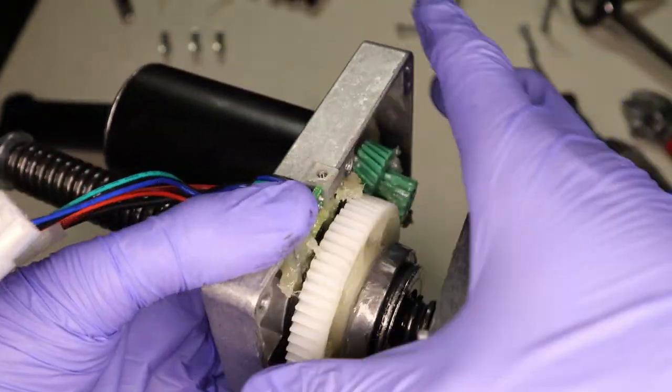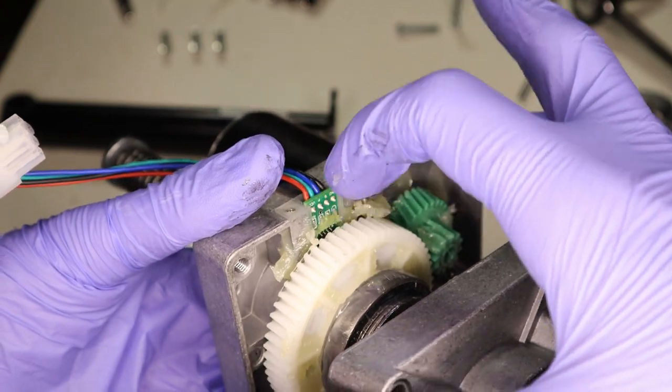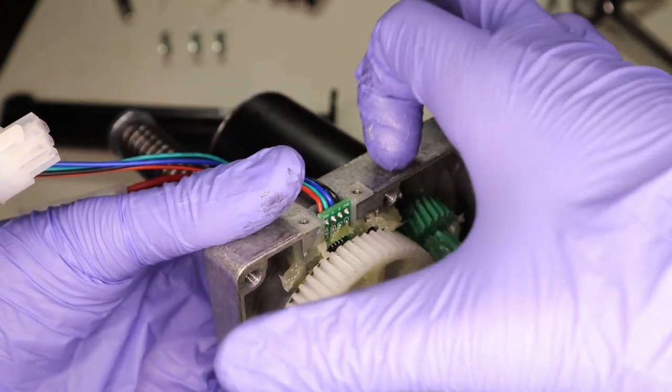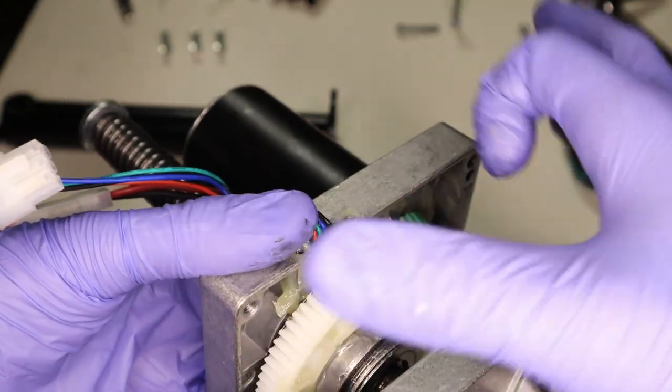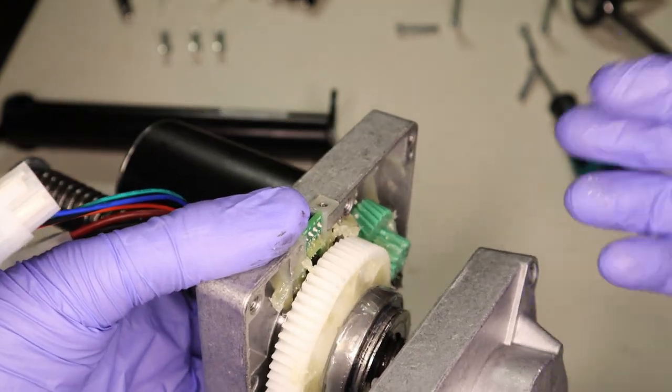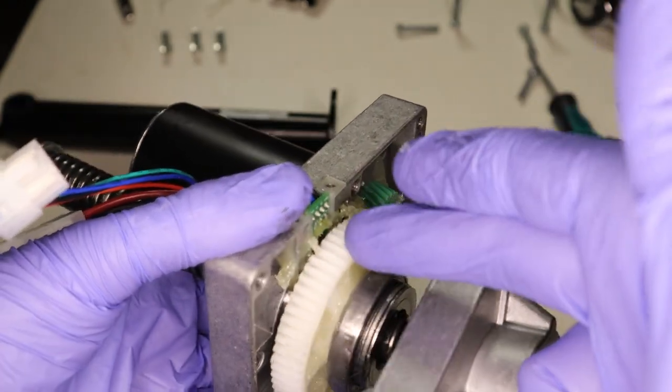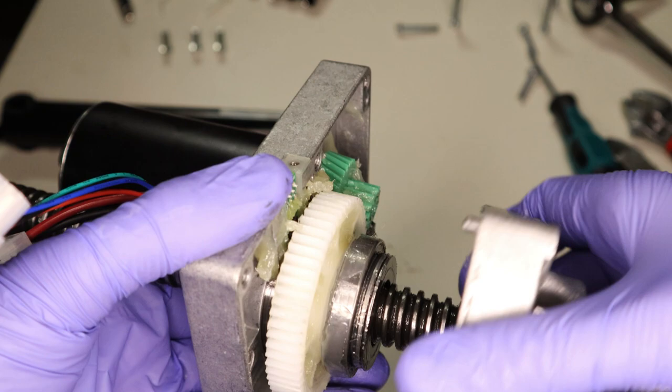Anyways, I'm not going to try to take that off. You can see that probably there's a magnetic sensor in here on the back of this white gear. There's probably an indexed magnetic ring, so as it spins around, it knows where it is so it can count the revolutions.